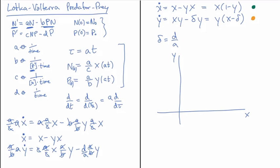The x-dot equation equals zero when x equals zero — that's right along the y-axis — and the other place where x-dot equals zero is where y equals 1. The y equation equals zero when y equals zero, along the x-axis, and also along the line x equals δ.